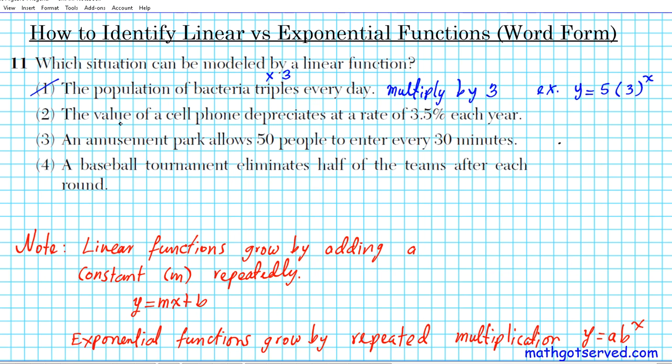Question two, the value of a cell phone depreciates at a rate of 3.5% each year. So rate of what operation do you associate with? Rate represents multiplication. So the rate has been multiplied by a depreciation factor of 3.5% each year. So the rate is decreasing by 3.5% each year, what's going to be happening is we're going to be multiplying by 100% minus 3.5%. That's what we're going to be multiplying by.